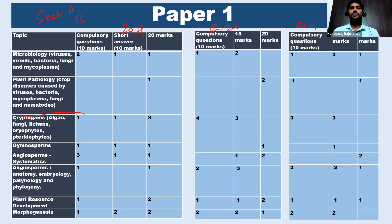so more number of questions are in section A. Actually, these topics, there is no clear boundary between section A and section B, but section A is dominated by these four topics: microbiology, plant pathology, cryptogams, and gymnosperms. And angiosperms are common to both section A and section B. And finally, these two topics, plant resource development and morphogenesis, the questions are in section B.